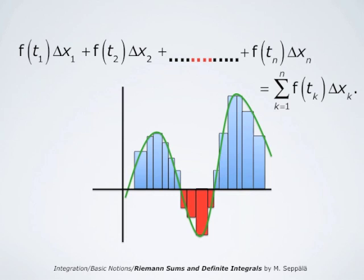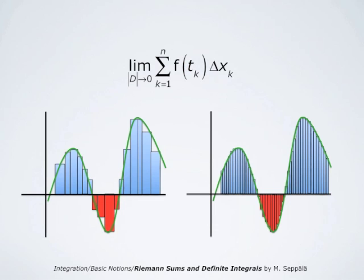Clearly, this Riemann sum depends on the choice of the points X0, X1, X2, and so forth, Xn — that is, on the decomposition of the interval into subintervals — and on the tag points that we choose. We get rid of this dependence by taking a limit as we make this decomposition finer and finer. So we take a limit as the coarseness of the decomposition approaches 0, and then for many functions, this limit does not anymore depend on the choice of the tag points, nor on the choice of the decomposition D.